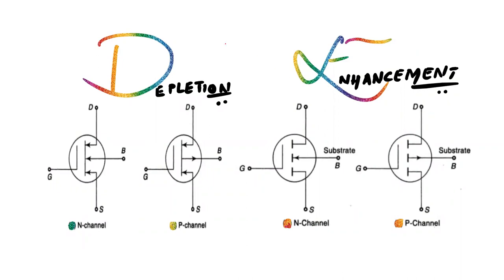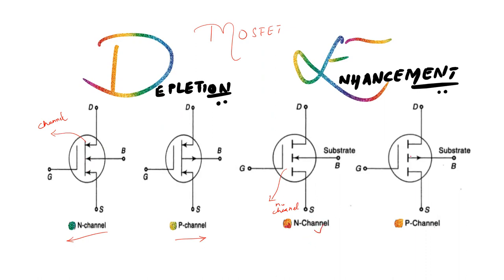Looking at the symbols: for depletion MOSFET, a straight line is drawn in the symbol because a channel already exists. Arrow mark pointing inside means N-channel; arrow mark pointing outside means P-channel. For enhancement MOSFET, there is no straight line in the symbol because there is no channel initially. The arrow mark direction is the same: inside for N-channel, outside for P-channel. All symbols have gate, source, drain, and a substrate or body terminal, with source and body connected in some textbooks.